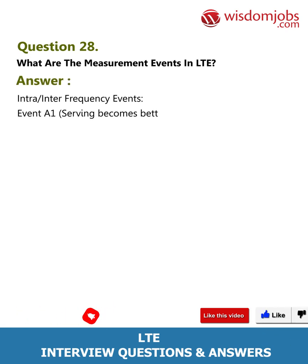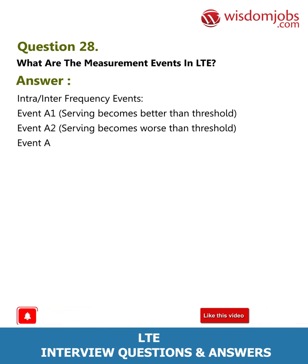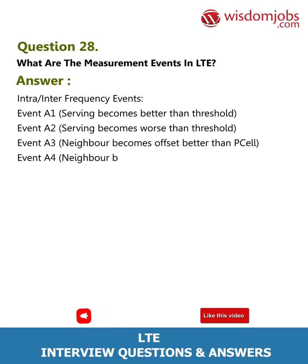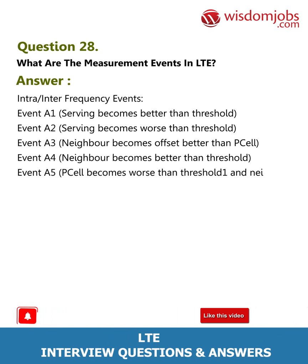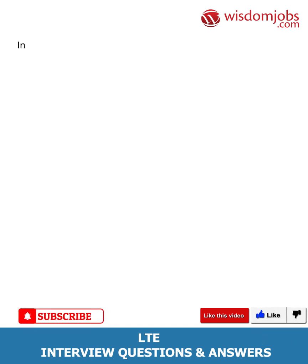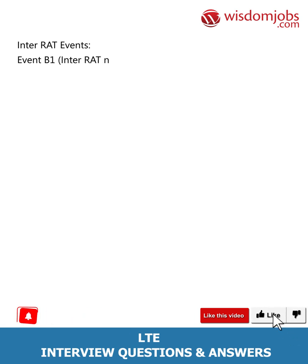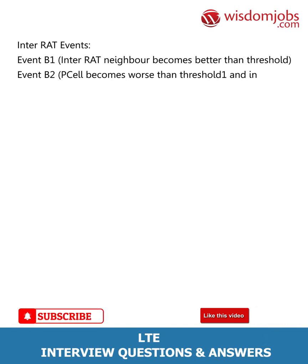Question 28: What are the measurement events in LTE? Answer: Intra/inter frequency events — Event A1: serving becomes better than threshold; Event A2: serving becomes worse than threshold; Event A3: neighbor becomes offset better than PCell; Event A4: neighbor becomes better than threshold; Event A6: SCell enters range. Inter-RAT events — Event B1: inter-RAT neighbor becomes better than threshold; Event B2: PCell becomes worse than threshold and inter-RAT neighbor becomes better than threshold.